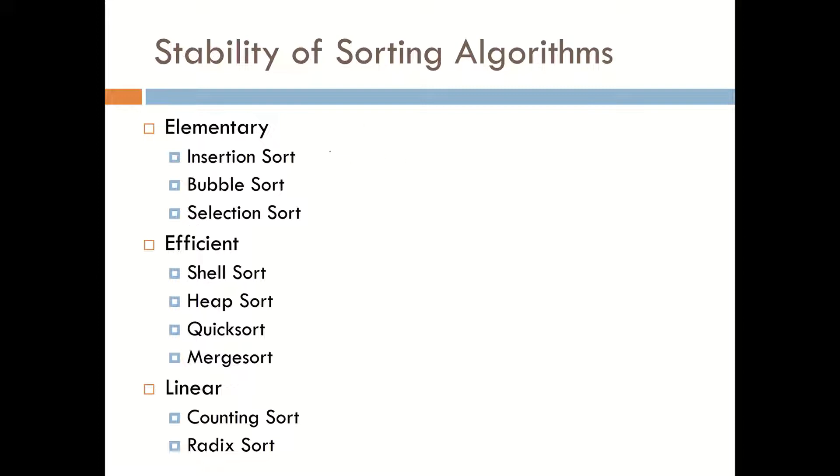So insertion sort, as you'll recall, only takes a look at, assuming that this is the sorted portion, and we just revealed this card. This card will only travel as far as it needs to in order to be placed in its final location. Therefore, if there was a one here and a four here, which I'm willing to call 4a and a four here, since this four is not greater, is not less than this four, this data would not be moved.